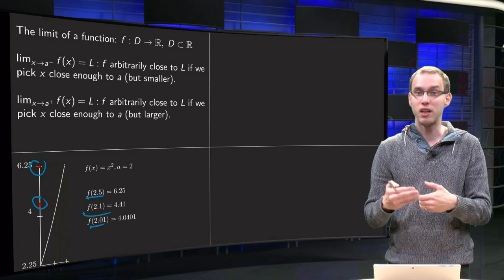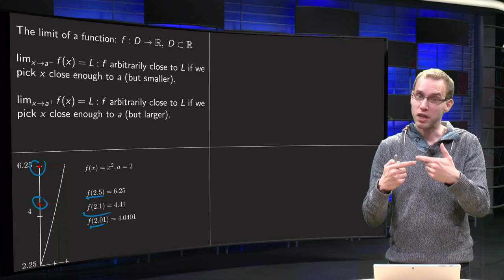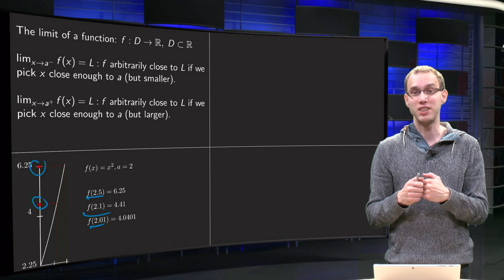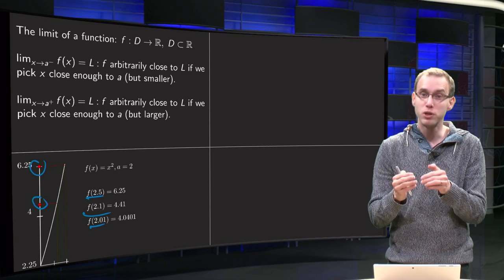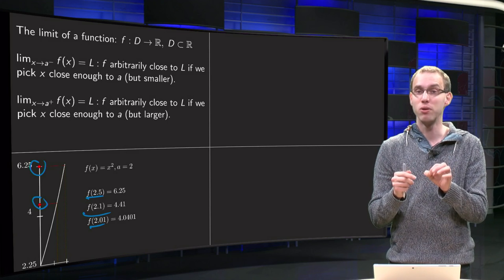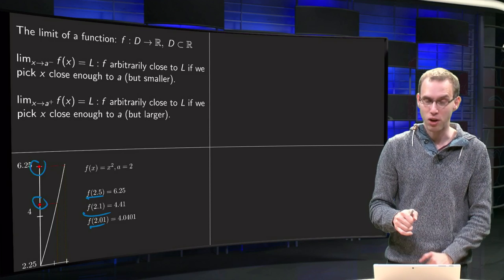And you'll see what's happening, we are approaching a value of L which we get arbitrarily close to 4, but we are taking values above x equals 2. So we are approaching 4, we do not get to this value, but we will get arbitrarily close.